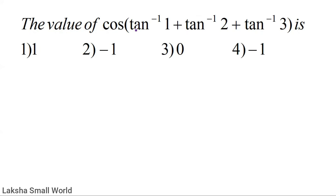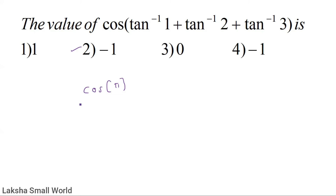The value of cos of (tan⁻¹(1) + tan⁻¹(2) + tan⁻¹(3)). Taking cos of π gives cos(π) = −1. So the second option is correct.